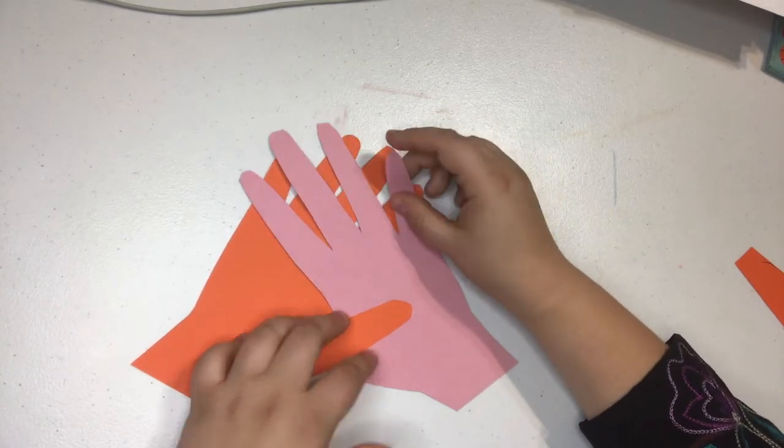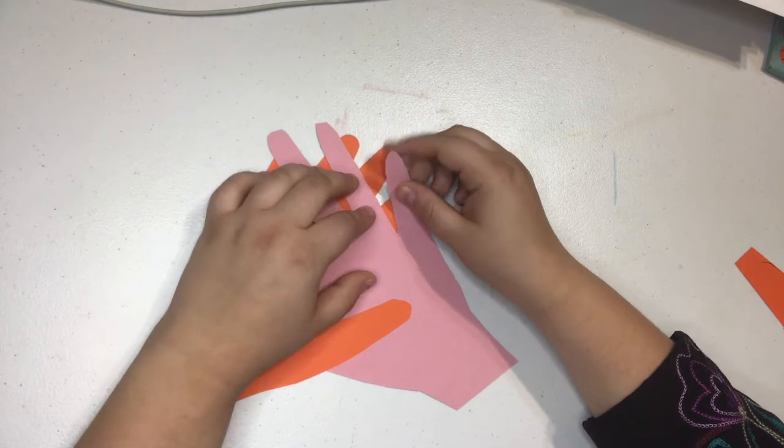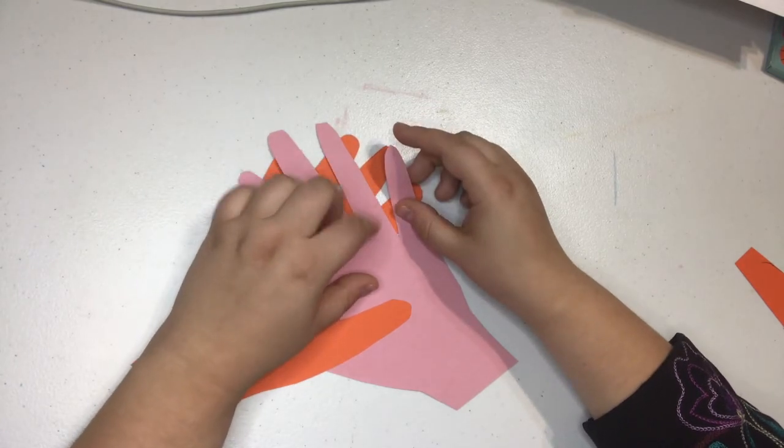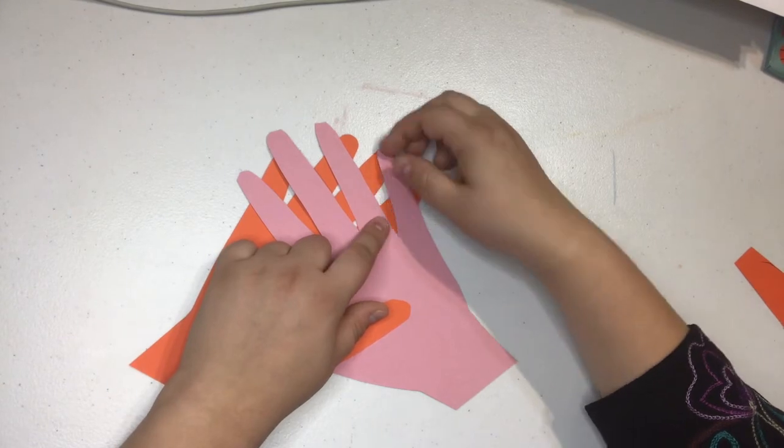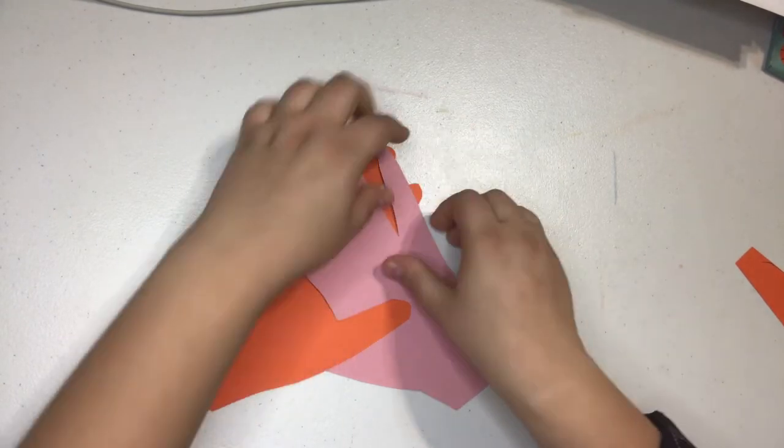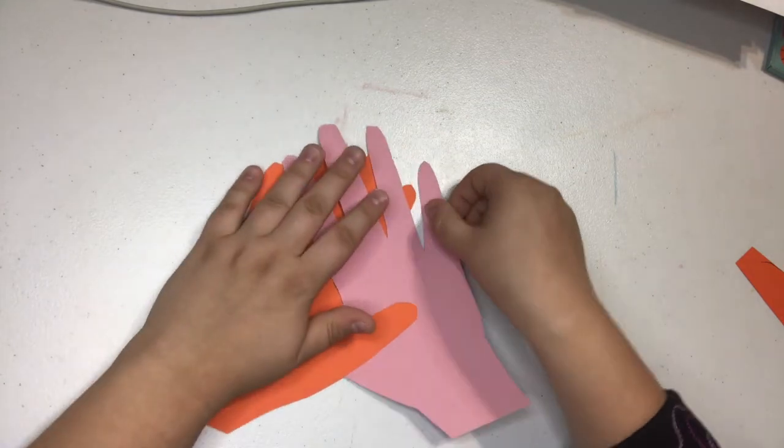When you weave, you need to make sure that the one next to it is the opposite. So I'm actually looking at this and I'm thinking that my pinky should go underneath the finger.